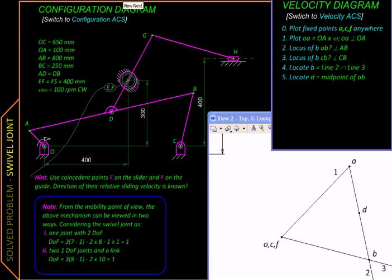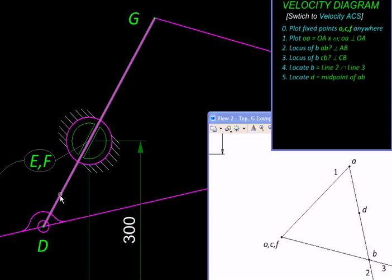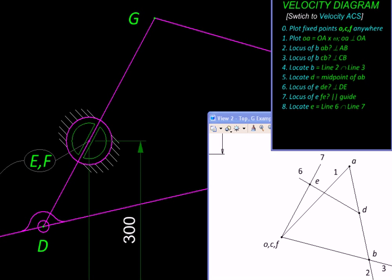From d we can move to this point e on link dg. Its motion will be perpendicular to ed relative to d, so from d we plot a line perpendicular to d e. Relative to its coincident point f, the motion will be sliding along this direction, so from f we can draw a line along the sliding velocity. Wherever these two loci intersect, we locate point e.